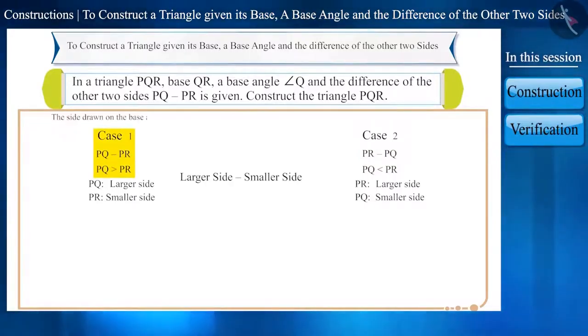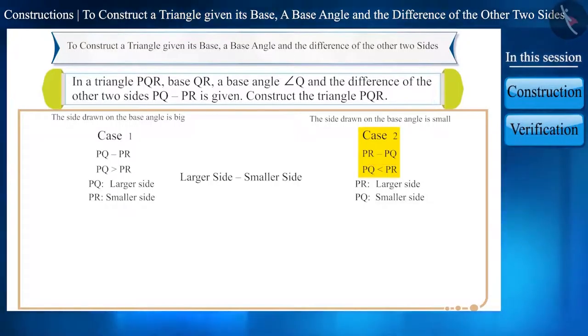Case 1, the side drawn on the base angle is big, PQ greater than PR, i.e., PQ minus PR is given. Or case 2, the side drawn on the base angle is small, PQ lesser than PR, i.e., PR minus PQ is given.